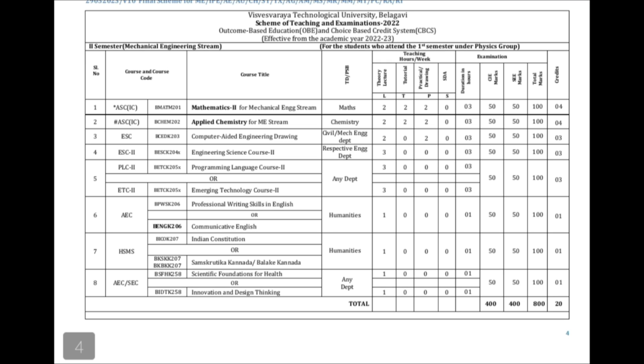For higher semesters, you will not see four-credit subjects. In the sixth, seventh, or eighth semester, those four-credit points are not present. It is only in the first and second semester that subjects carry four credits each.